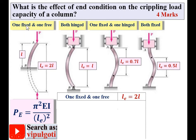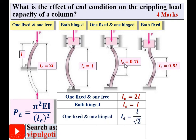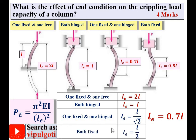Summary table: Case one — one end fixed, one end free — effective length is 2L. Case two — both ends hinged — effective length equals L. Case three — one end fixed, one end hinged — effective length is L divided by root 2, or 0.7L. Simplifying 1 over root 2 gives 0.7, so it is easy to remember as 0.7L. Case four — both ends fixed — effective length is half the actual length, or 0.5L.